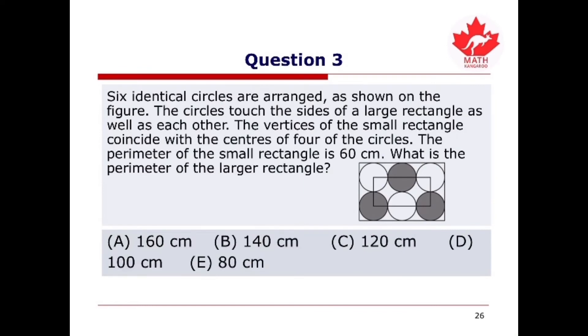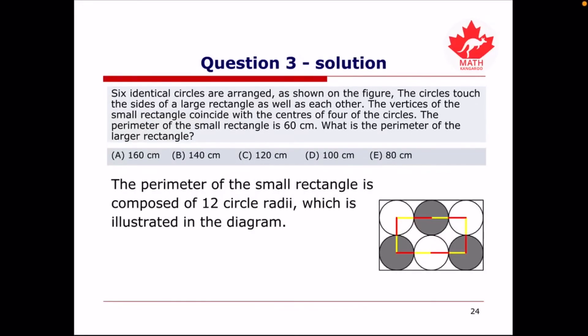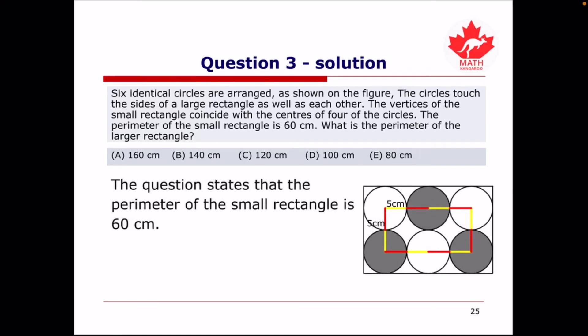We will now look at question 3. Six identical circles are arranged as shown. The circles touch the sides of a large rectangle as well as each other. The vertices of the small rectangle coincide with the centers of four of the circles. The perimeter of the small rectangle is 60 centimeters. The perimeter of the small rectangle is composed of 12 circle radii. Therefore, each radius equals 60 divided by 12, or 5 centimeters.